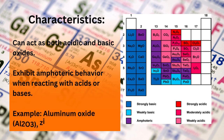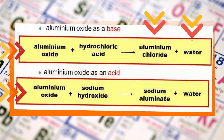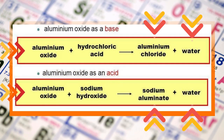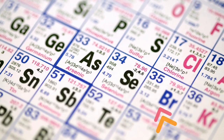Examples of amphoteric oxides include aluminum oxide (Al2O3) and zinc oxide (ZnO). Aluminum oxide reacts with hydrochloric acid to produce aluminum chloride and water, and also reacts with sodium hydroxide to produce sodium aluminate and water.